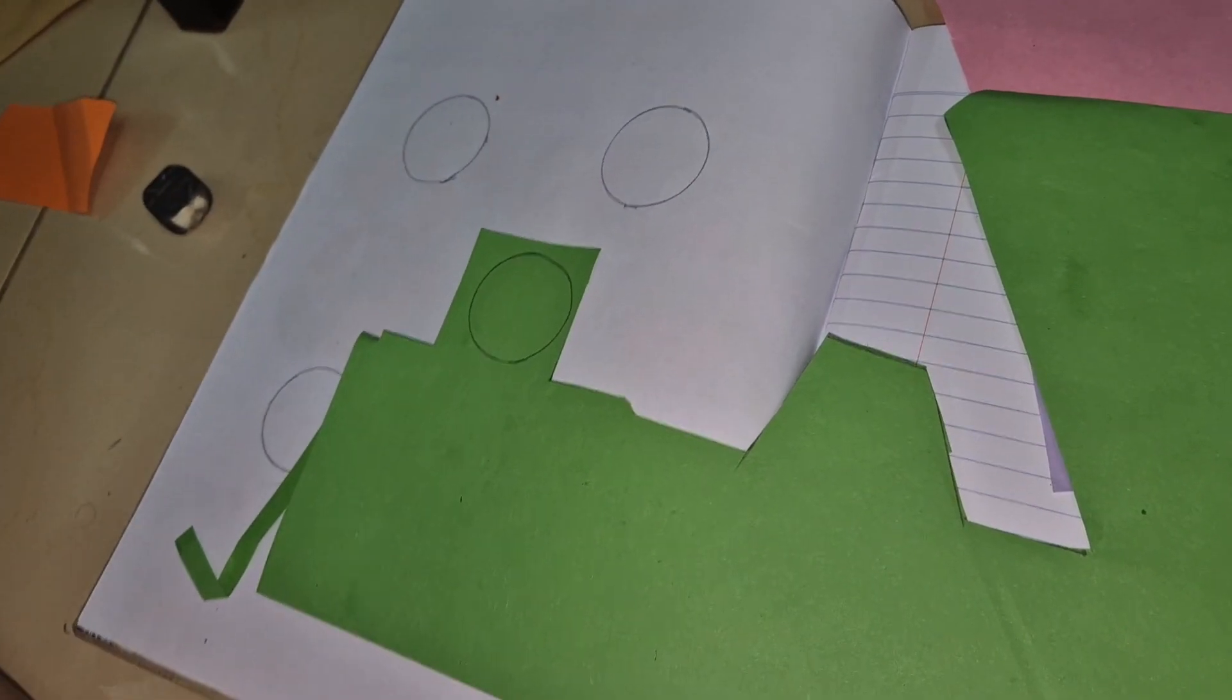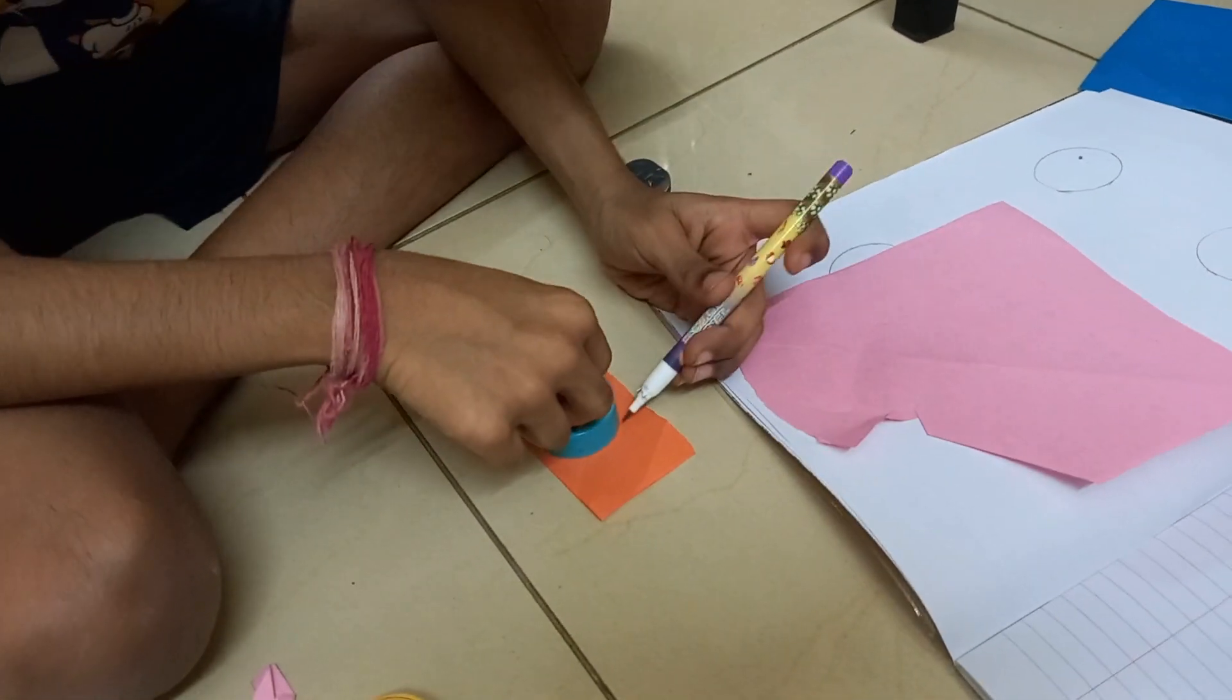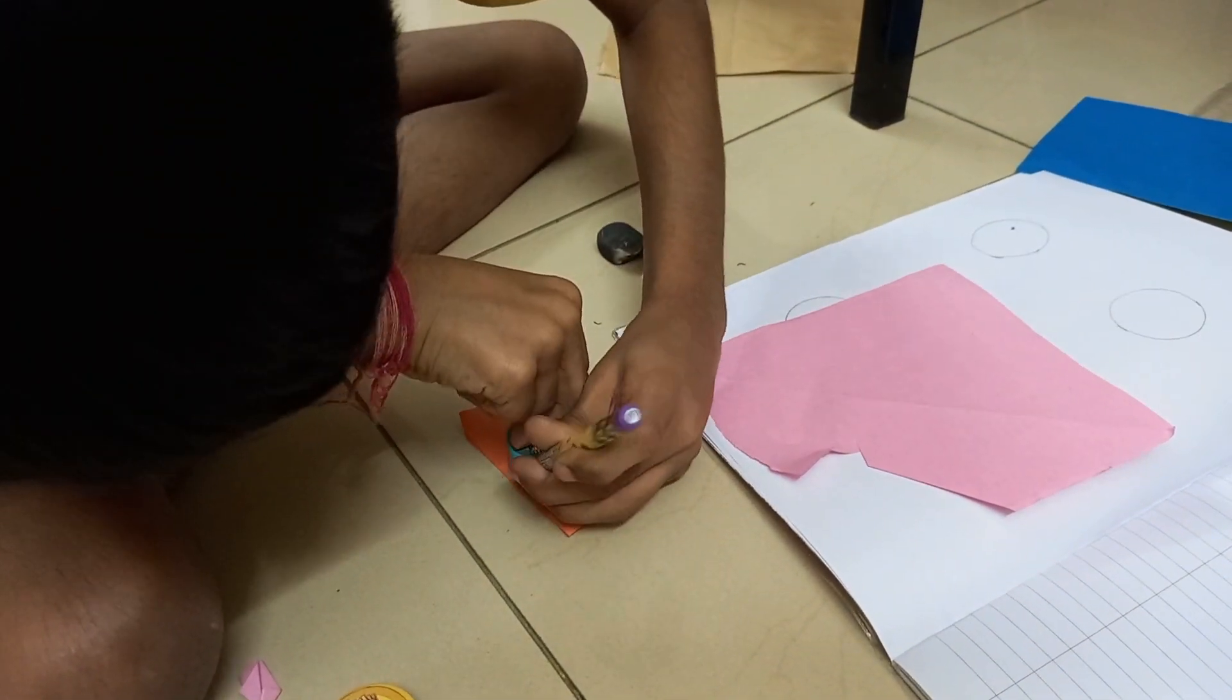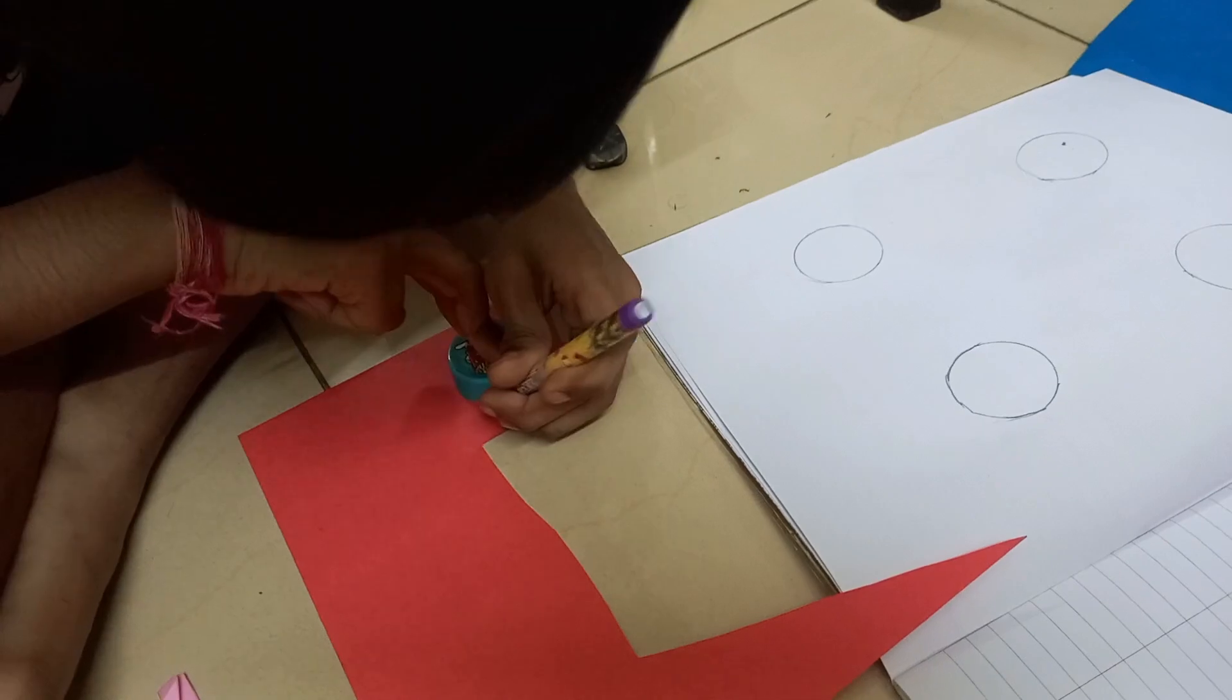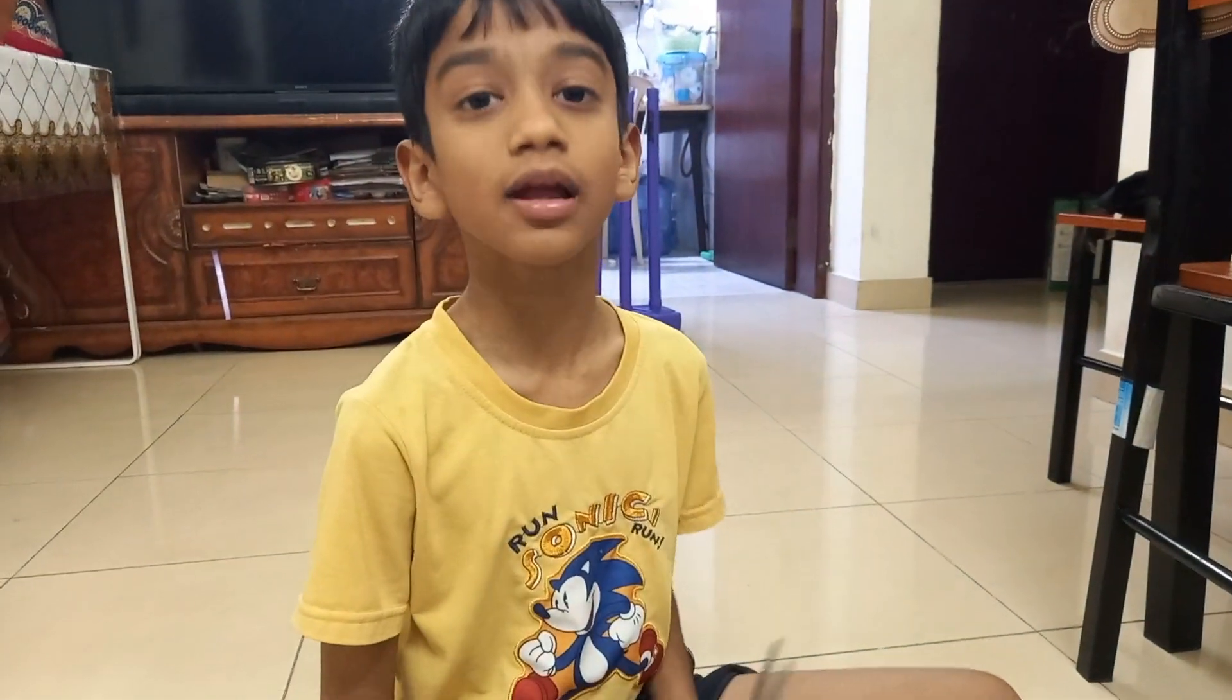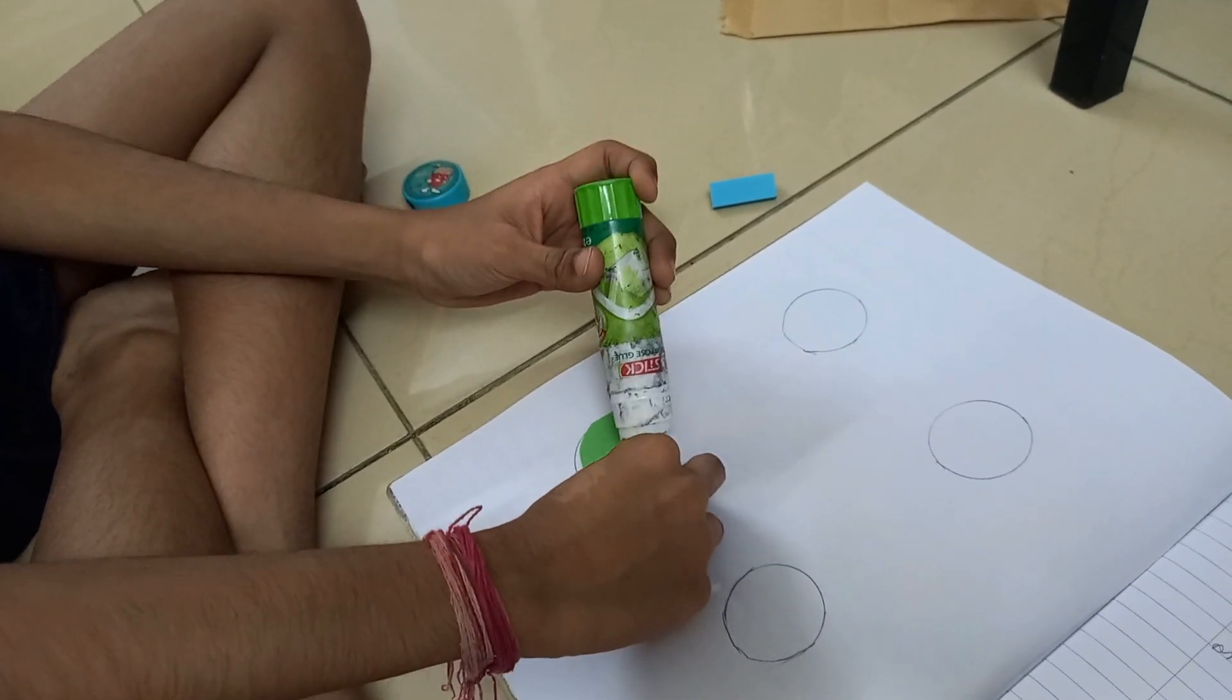The circle is looking like this. Now let's go for the second circle. Let's cut the circle down. Above this glue, we should stick this circle down.